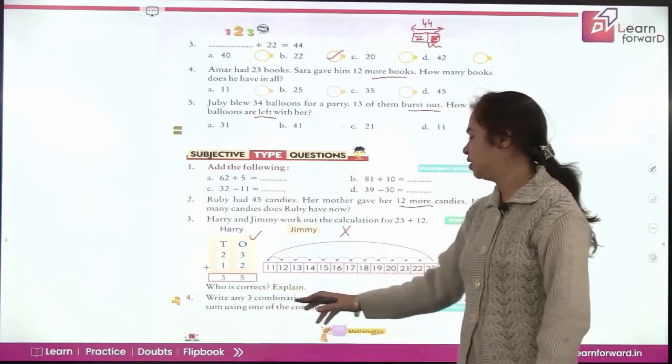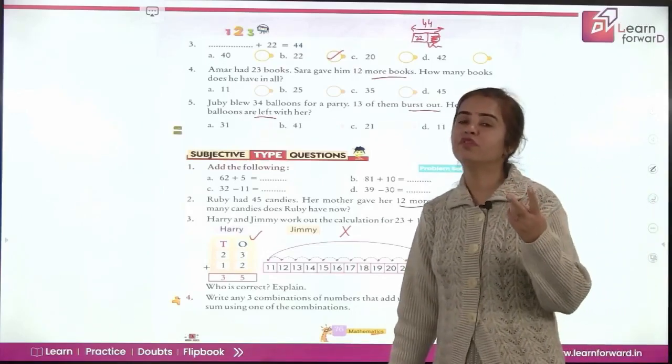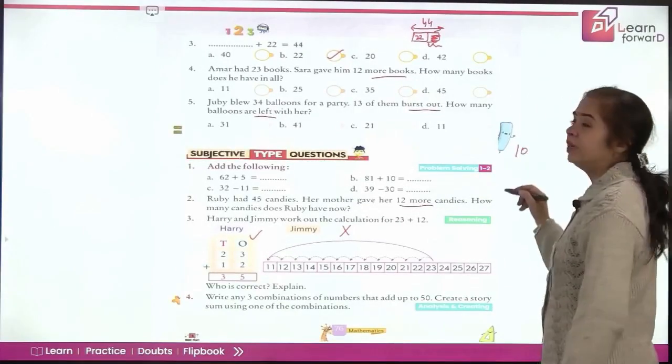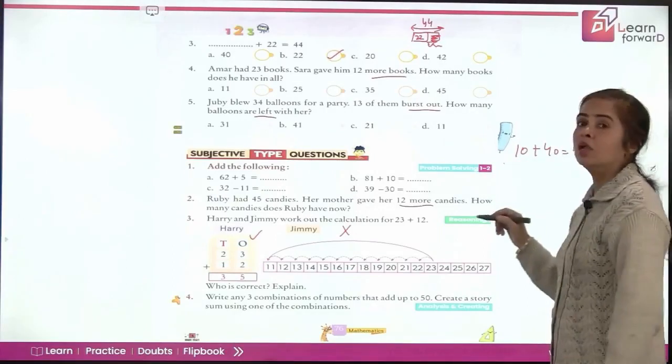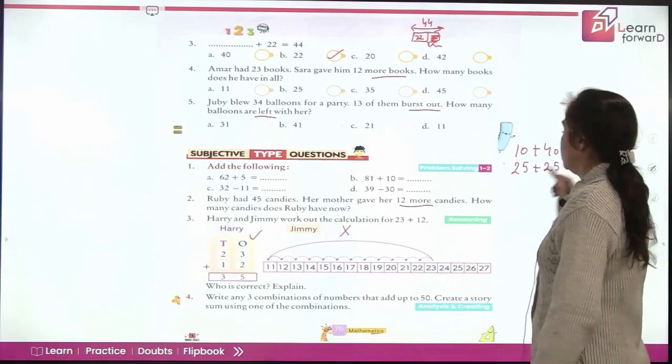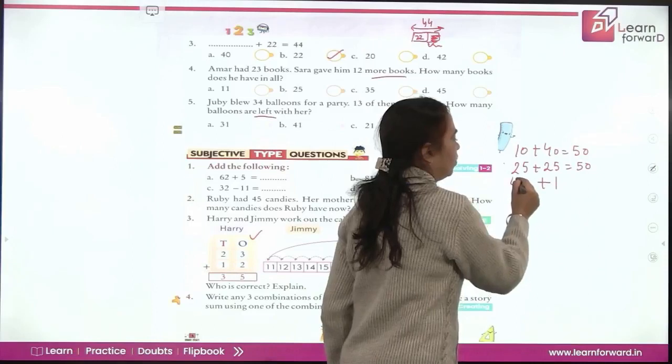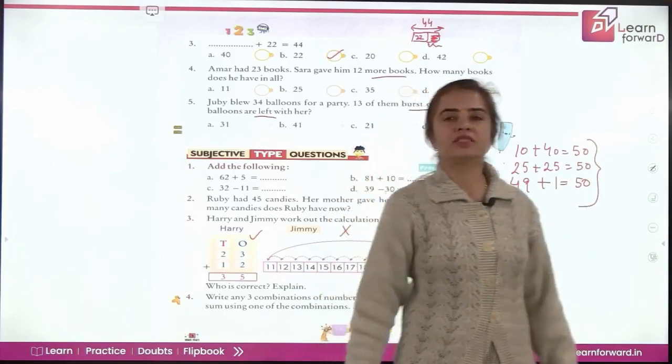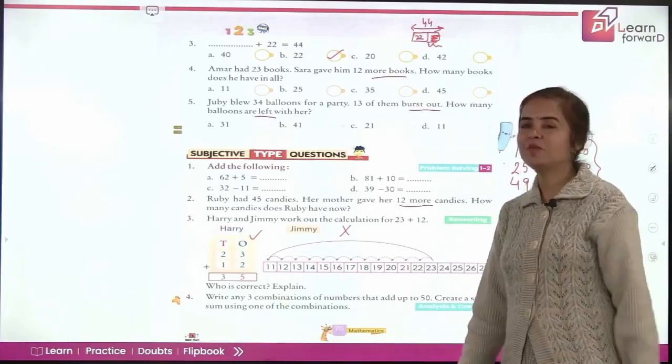Now next question is write any three combinations of numbers that add up to 50. So you can pick any two numbers for which you get 50 as the answer. If you take 10, with 10 what will be the other number? 10 plus 40 makes 50. You can even say 25 plus 25 makes 50. You know when you add one to any number you go to the next number. That means to which number will I add one? 49 and I get 50. There are many combinations like this. These are just the examples. You can find out your own combinations and get the sum of 50. So just have an experiment with the numbers.